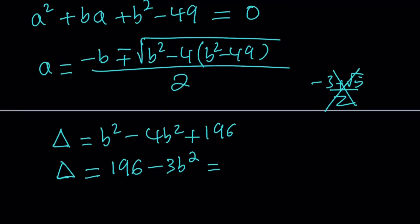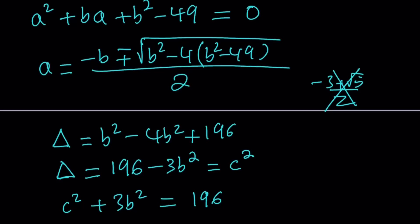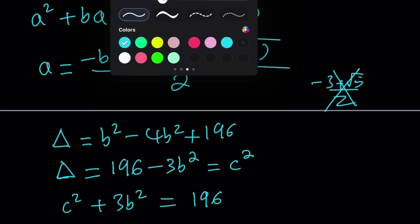Let's set delta equal to c squared. From here, we get another Diophantine equation: c squared plus 3b squared equals 196. A couple of things to think about — for example, 3b squared is a multiple of 3, so we can look at it from a mod 3 perspective.